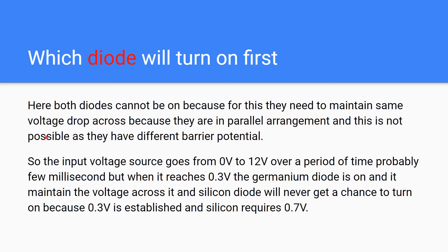The input voltage source is 12 volts. When you switch it on, starting from 0 volt, the voltage goes from 0 volt to 12 volt over a period of time — probably a few milliseconds. When it reaches 0.3 volt, the germanium diode turns on and maintains 0.3 volt across it, so the silicon diode never gets a chance to turn on.